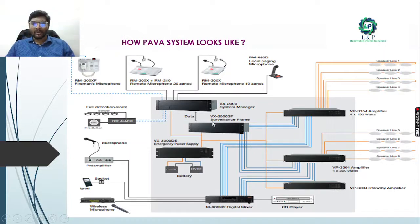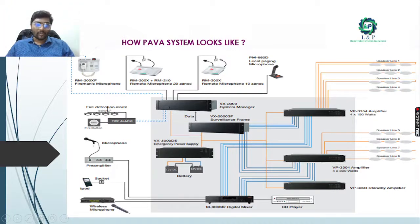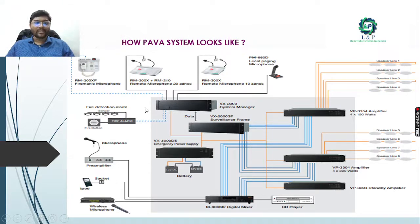The fire detection alarm is the most important component because once received, the evacuation process must begin. Whatever is happening through the speakers, this signal is given the highest priority. It is connected to the system manager, and the fireman microphone is also connected to the PAVA system. If a fire alarm signal occurs from these two, it is given the highest priority and the evacuation scenario begins.